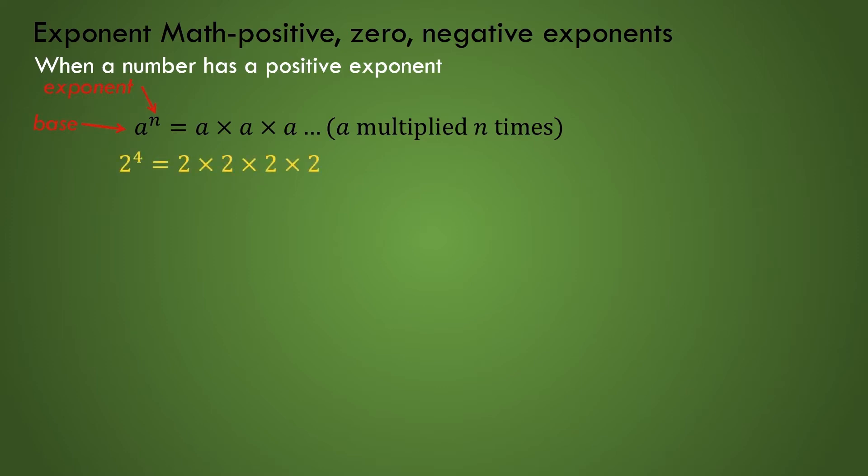So 2 to the fourth would be the same as 2 times 2 times 2 times 2 where 2 is the base and 4 is the exponent. The more common exponents are a squared or a to the power of 2 and a cubed, which is a to the power of 3.